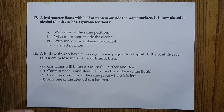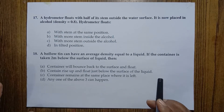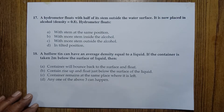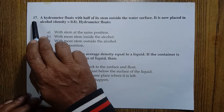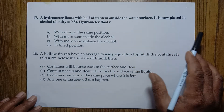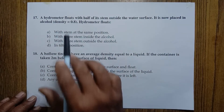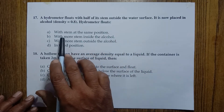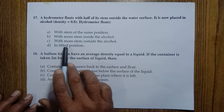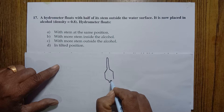We are continuing the objective questions related to the chapter on pressure. Question 17: a hydrometer floats with half of its stem outside the water surface. It is now placed in alcohol with a relative density of 0.8. The options are: the hydrometer floats at the same position, with more stem inside the alcohol, with more stem outside the alcohol, or in a tilted position.